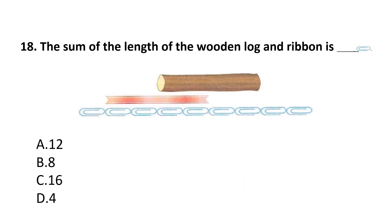Question number 18. The sum of the length of the wooden log and the ribbon is how many pins? The length of the ribbon is 4 pins and the length of the log is also 4 pins. So the total sum is 4 plus 4, that is 8. The answer is option B.